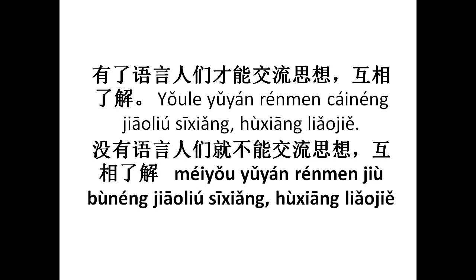Let us see how this has been rewritten by using two negative words. May you not have Yuan language. Not having language, Ranman people Chiu Den Poonang — cannot Chiao Liu Si Xiang, communicate opinion, Hu Xiang Liao Chie, understand each other. The two negatives here are 'May you' and 'Poonang' — not have, and not have the ability to.